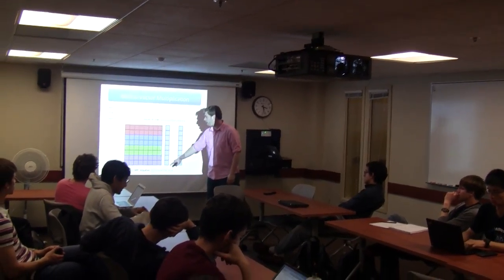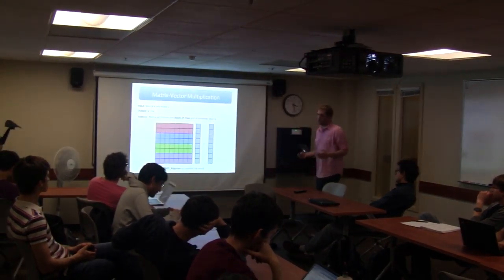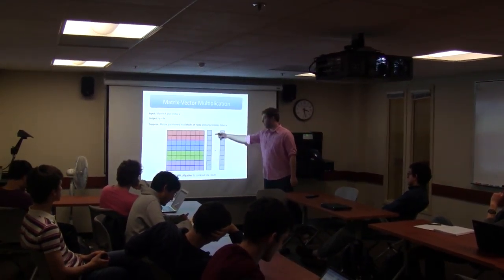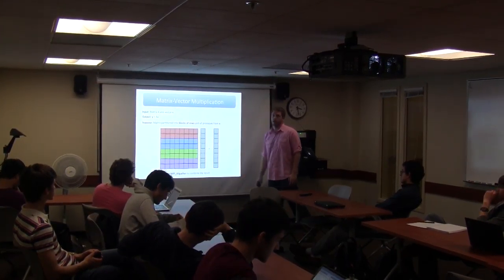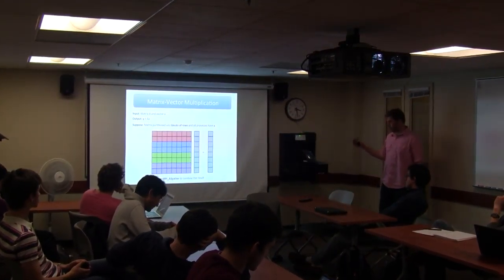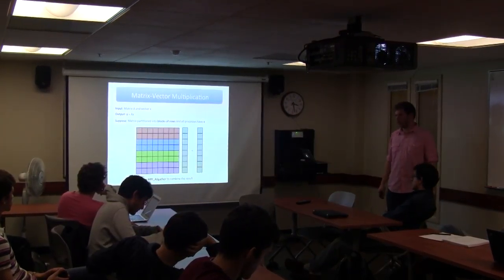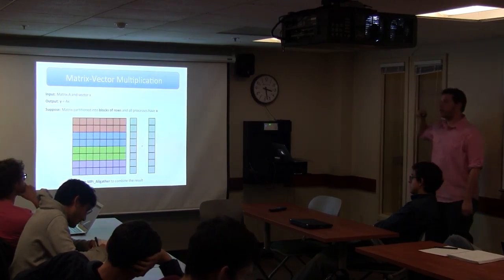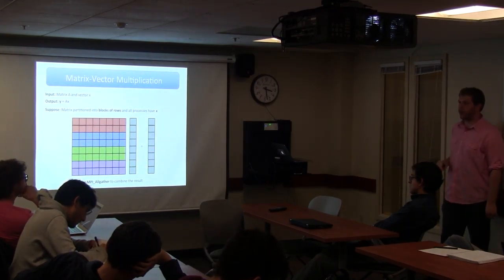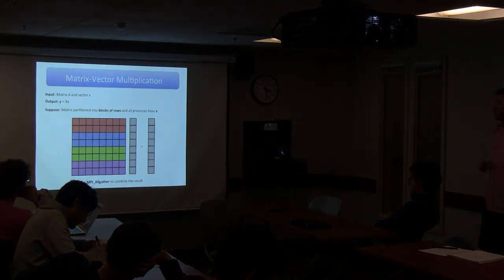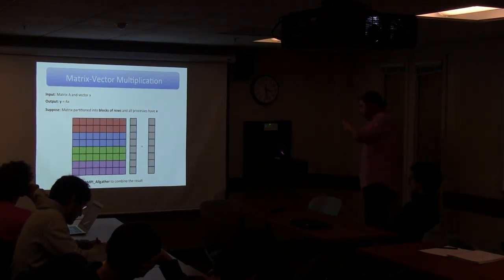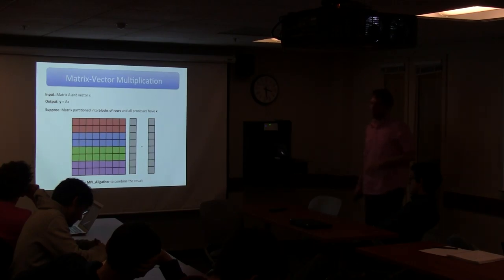The matrix-vector product happens on each processor. If we imagine vector X is on every processor, we use local matrix-vector multiplications. The result is a piece of the answer, and then we do something like an all-gather to concatenate the pieces together and get the result. So that's not too bad.